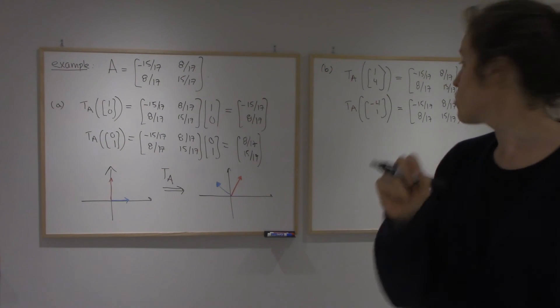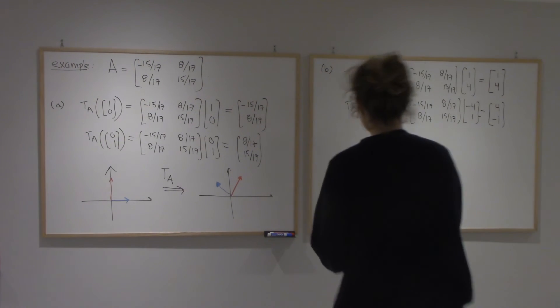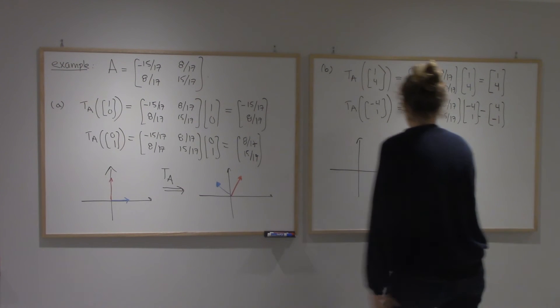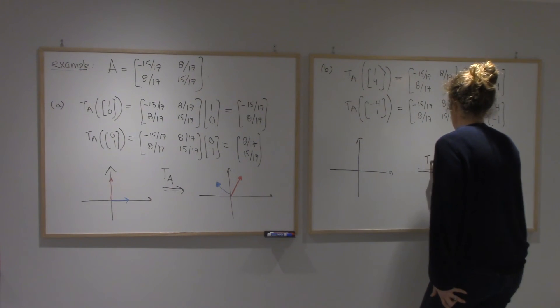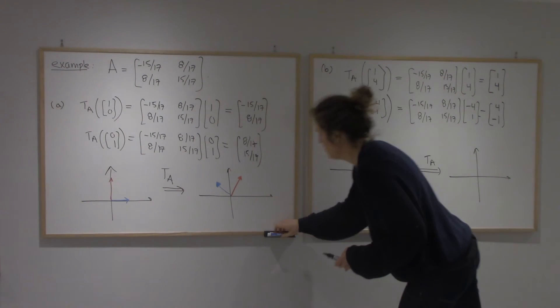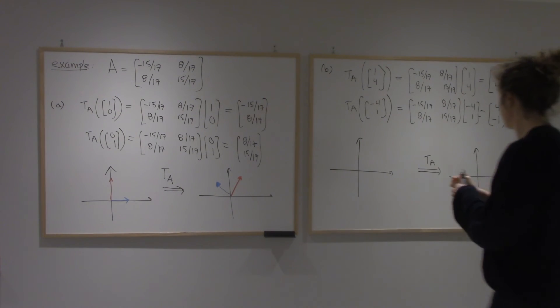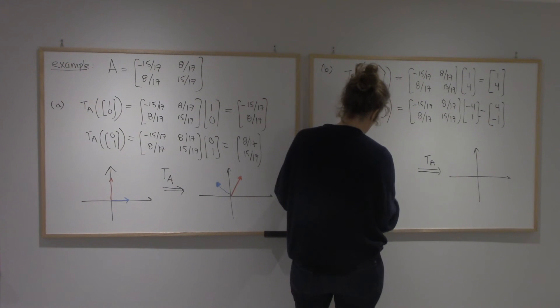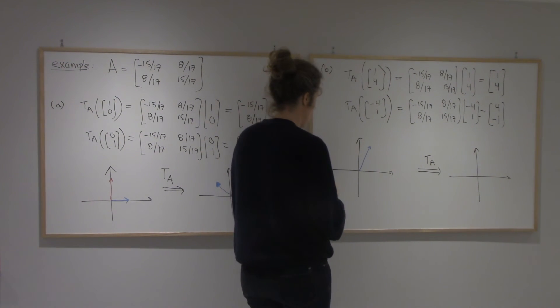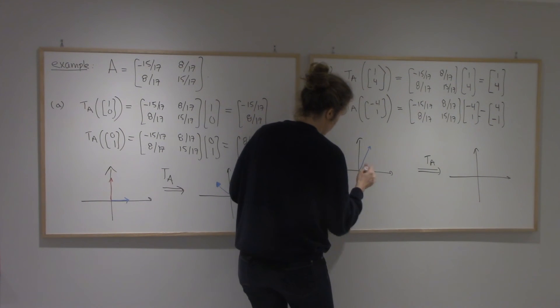Alright, let's draw this. Okay, so I'm going to take the same plane. But now my vectors are going to be (1, 4). So 1, 4 is about here. And then (-4, 1) is this vector.